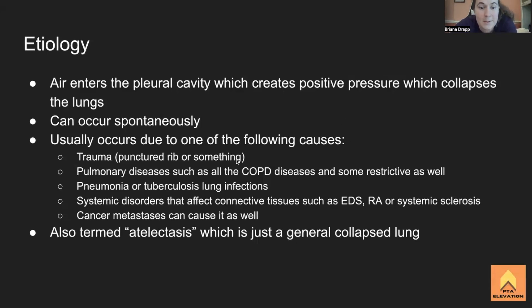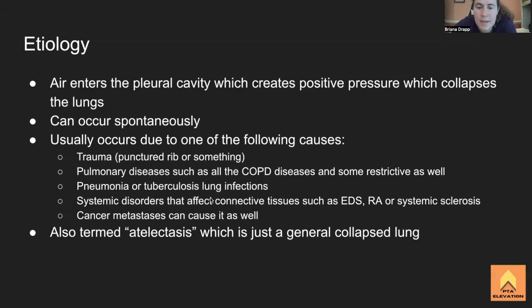Systemic and connective tissue disorders can also cause lung collapse. Ehlers-Danlos syndrome can cause aneurysms and lung problems. Rheumatoid arthritis and systemic sclerosis affect connective tissue throughout the body — if connective tissue is too hard or too stretchy, it causes problems. Additionally, lung cancer or metastases to the lungs — one of the primary sites of metastasis — can cause the lung to collapse.